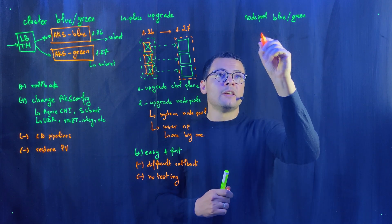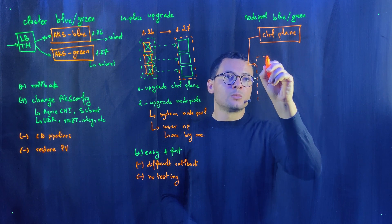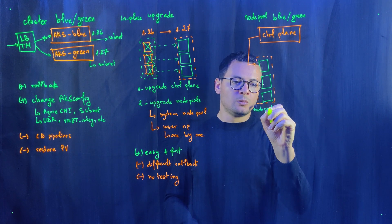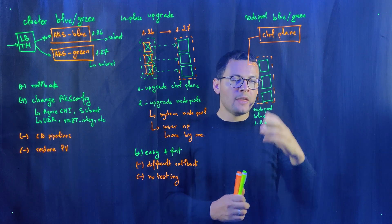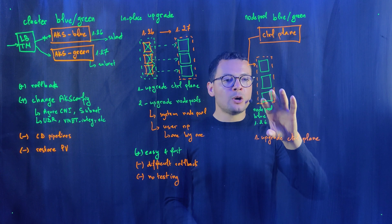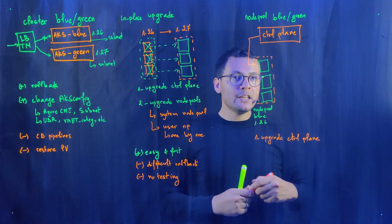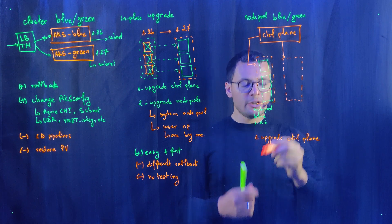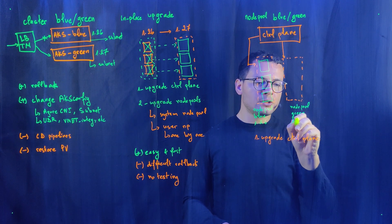In an AKS cluster, we always have a control plane, and a cluster can have one or multiple node pools, each containing one or multiple virtual machines. Let's say this is the blue node pool running version 1.26, and I want to upgrade to version 1.27. As always, I first upgrade the control plane. Then, instead of upgrading the existing node pool in place, I create a new node pool — let's call it the green node pool — with the new version 1.27.